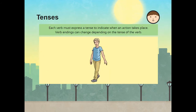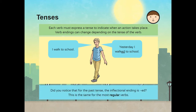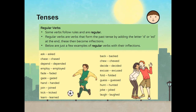Review activity. Tenses. Each verb must express a tense to indicate when an action takes place. Verb endings can change depending on the tense of the verb. I walk to school is the present tense. In the past tense, this will be: yesterday I walked to school. Did you notice that for the past tense, the inflectional ending is -ed? This is the same for most regular verbs. Regular verbs are verbs that form the past tense by adding the letter d or ed at the end. These then become inflections.